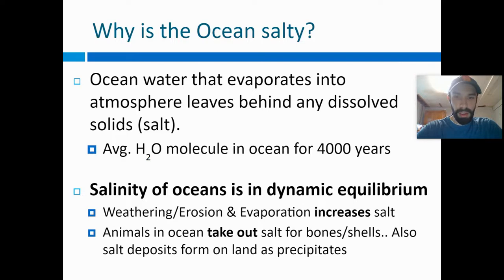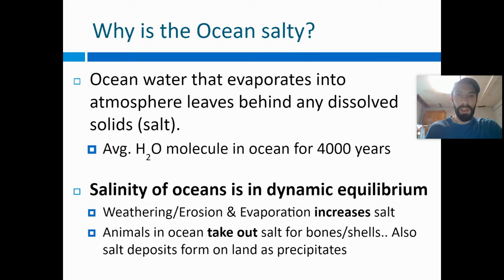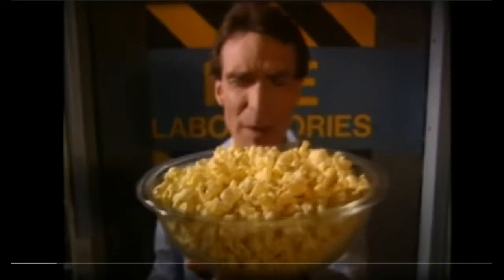Oceans are salty because water running off the land into the ocean carries with it a whole bunch of dissolved stuff — salt from the processes of weathering and erosion. All this salt runs off the land and into the ocean. As the oceans evaporate, the water goes up into the atmosphere, but the salt stays behind. So any salt running off the land stays in the ocean, and water is the only thing really circulating up into the atmosphere.